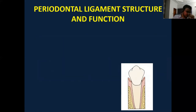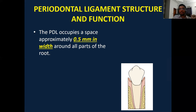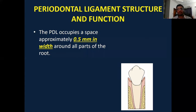Before we dive into the full details of orthodontic tooth movement, let's have a quick review of the normal anatomy and physiology of the periodontal ligament. As you know, the periodontal ligament is a connective tissue, and like all connective tissues it contains blood vessels, nerves, different kinds of cells, different kinds of fibers, and some extracellular matrix. The periodontal ligament contains all of these elements.